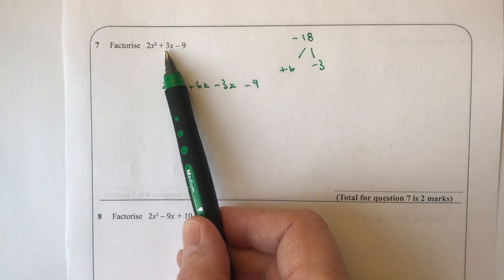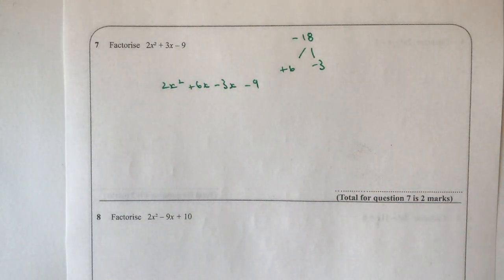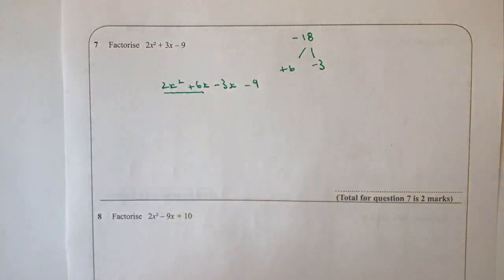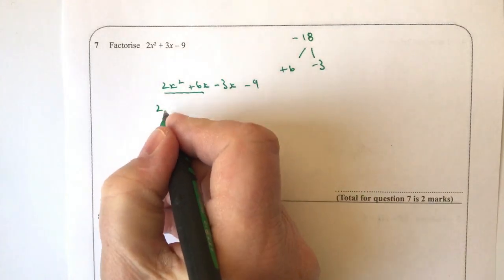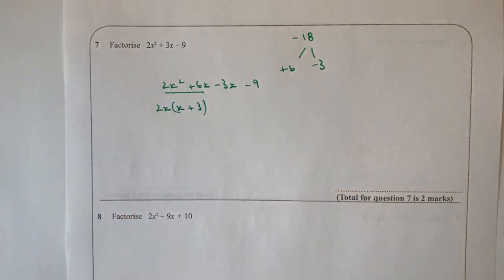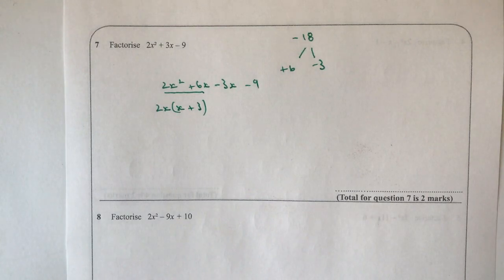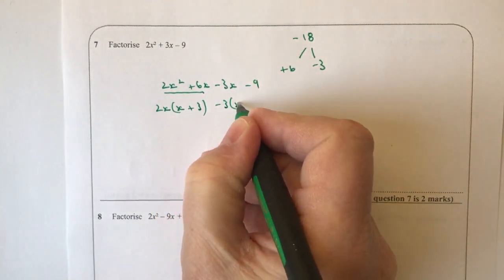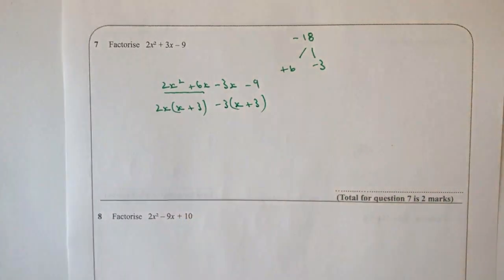And then the technique is to factorize the first two terms. If I factorize those two terms, I'm going to get 2x and x plus 3. Then I factorize the second two terms. I'm going to factorize those for minus 3, and I also get x plus 3.